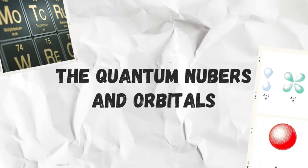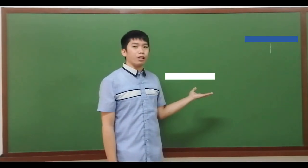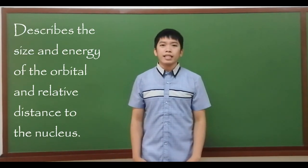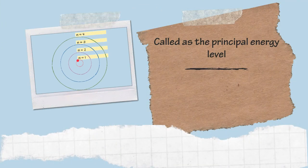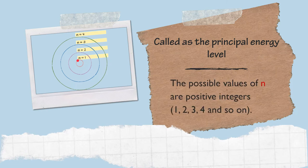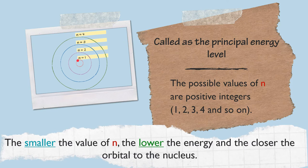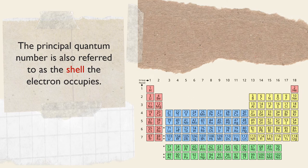Let us now discuss the quantum numbers and orbitals. The first quantum number is the principal quantum number represented by the small letter N. It describes the size and energy of the orbital and relative distance to the nucleus. This is why it is also called as the principal energy level. The possible values of N are positive integers like 1, 2, 3, 4, and so on. The smaller the value of N, the lower the energy and the closer the orbital to the nucleus. The principal quantum number is also referred to as the shell the electron resides.